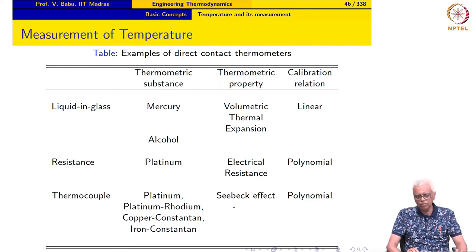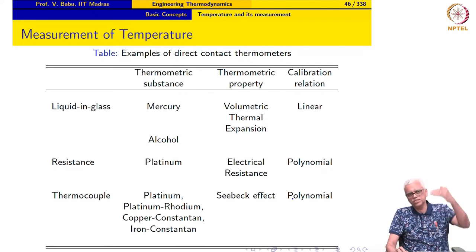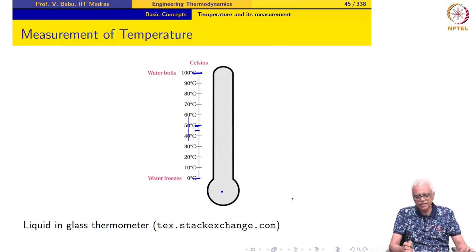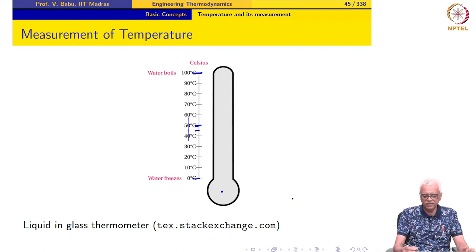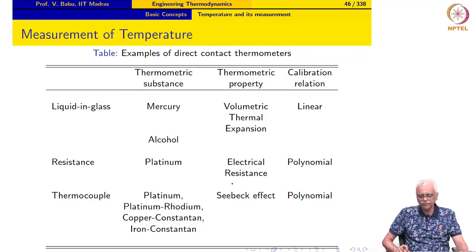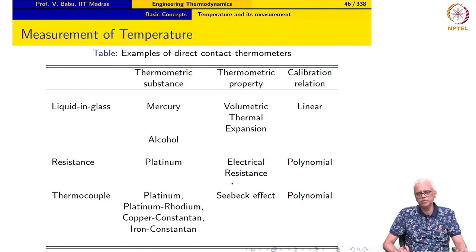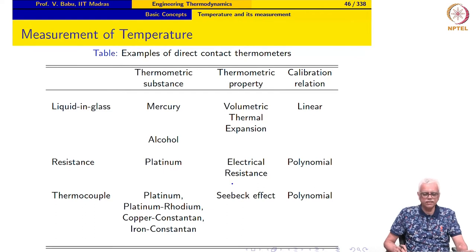A thermocouple uses the Seebeck effect as the thermometric property; again the range of temperatures covered is quite large, and this also uses a polynomial in temperature. If you draw a scale similar to what we saw earlier, the markings will be non-linear. But regardless of which thermometer we use, the fundamental issue remains: two thermometers will not agree with each other except at the fixed calibration points.